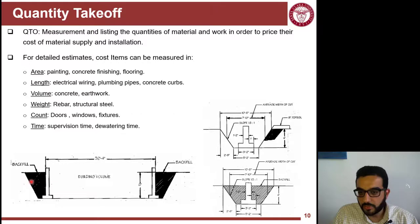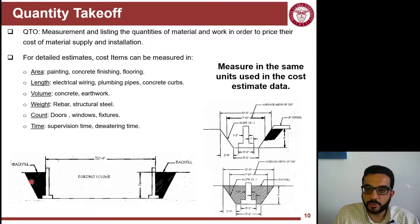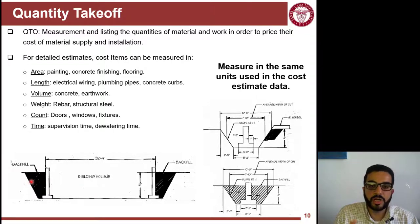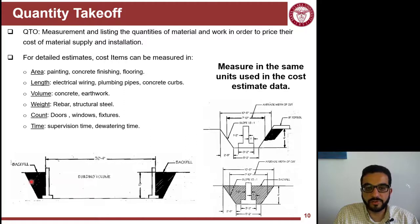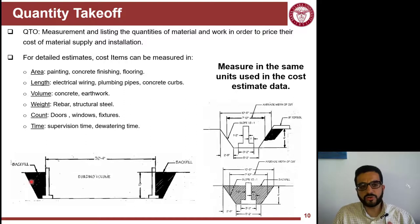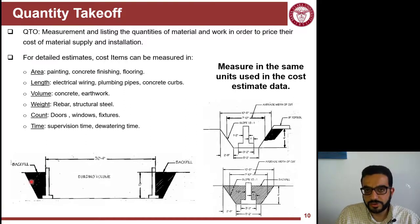Those are just a couple of examples to show how you actually do quantity takeoff and what units are involved. You always try to measure your quantities in the same units used in the cost estimate data. For structural steel, if your data source gives cost by linear foot for different cross sections, organize your quantities by cross section and measure in length. Some companies instead measure steel by ton — calculate the total weight of all beams and columns, add it up, and match that quantity to the cost data units available to you.